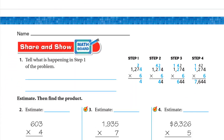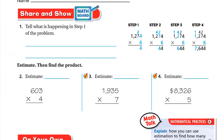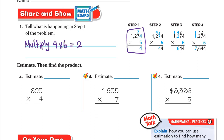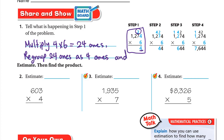For Share and Show: what is happening in step one? In step one, we multiplied 4 by 6 — that is 4 times 6 equals 24 ones. We are in the ones place, so we regroup 24 ones as 4 ones written down and 2 tens carried up.